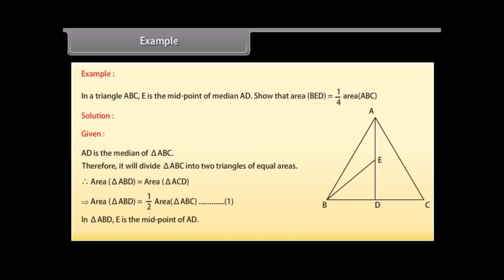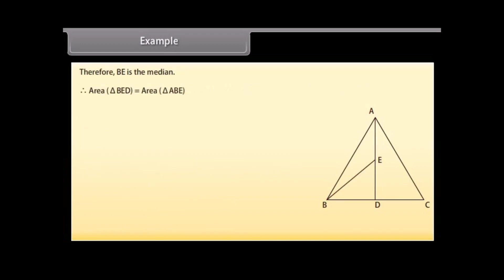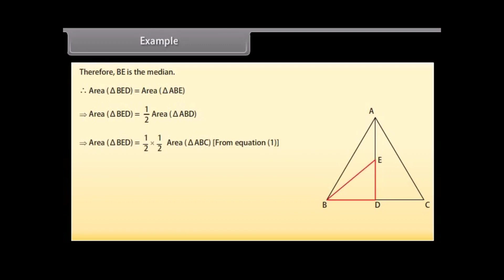In triangle ABD, E is the midpoint of AD. Therefore, BE is the median. Therefore, area of triangle BED is equal to area of triangle ABE, which implies area of triangle BED is equal to one-half of area of triangle ABD, which implies area of triangle BED is equal to one-half times one-half of area of triangle ABC from equation 1, which implies area of triangle BED is equal to one-fourth of area of triangle ABC.